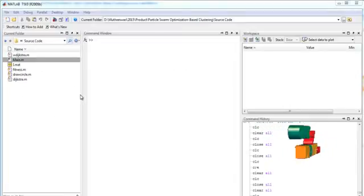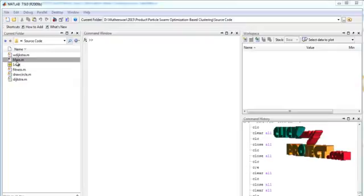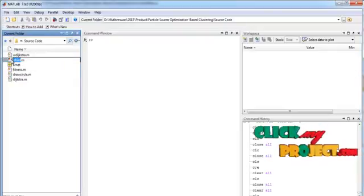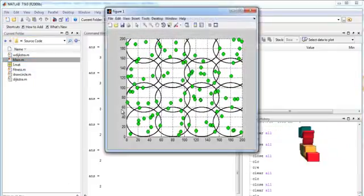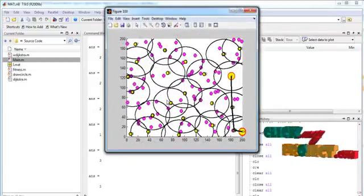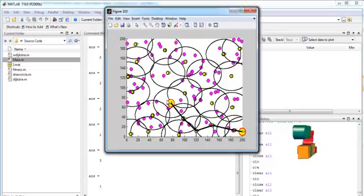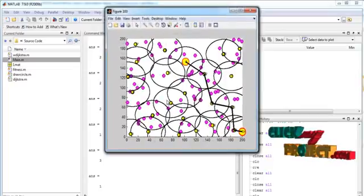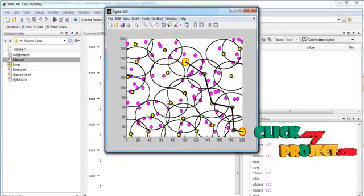Let me discuss the running procedure for our process. Select the main.m file in the current folder, right-click the file, and run to execute this process. Initially, the nodes are deployed randomly, and the cluster formation and cluster head selections are performed using PSO algorithm, that is particle swarm optimization algorithm.